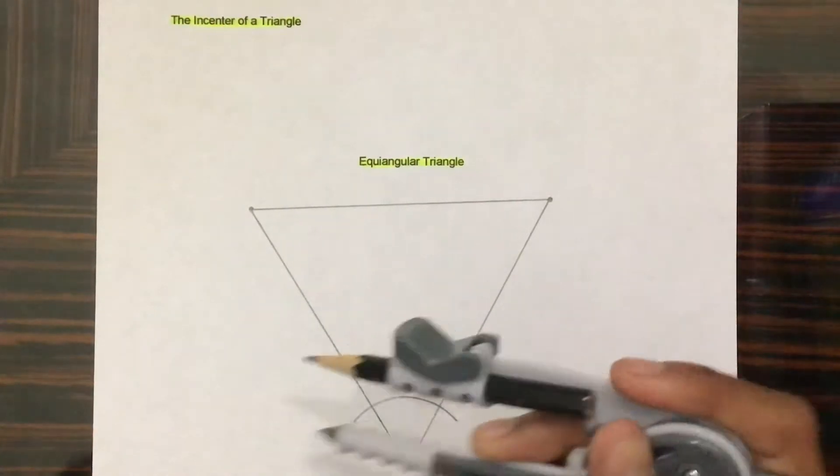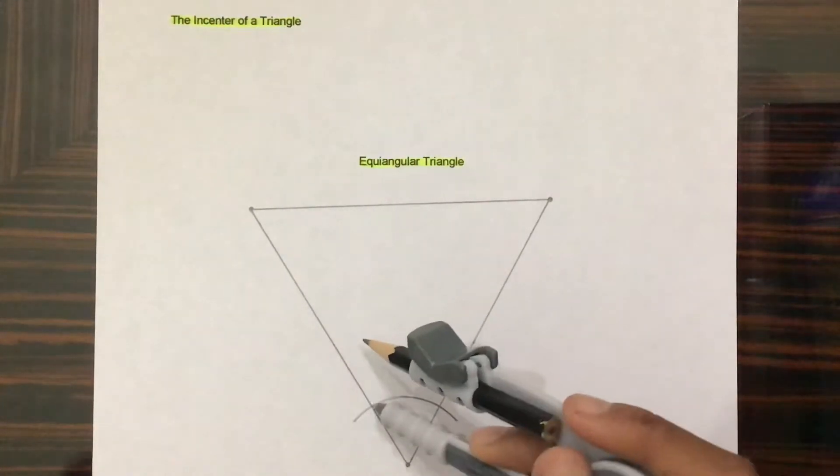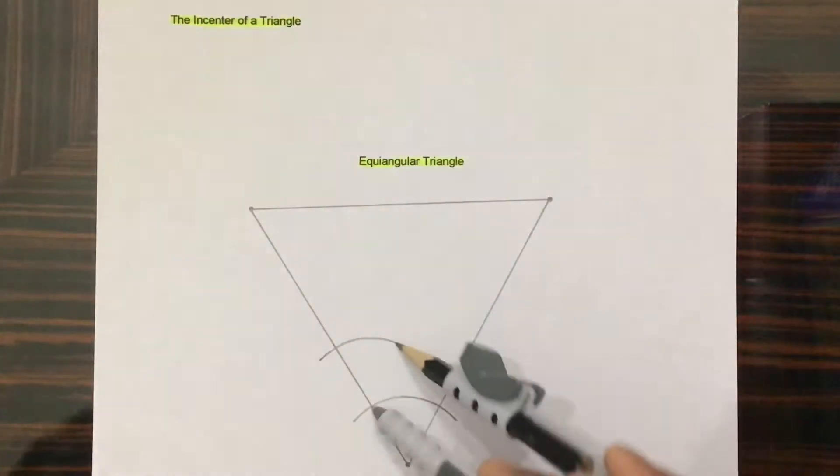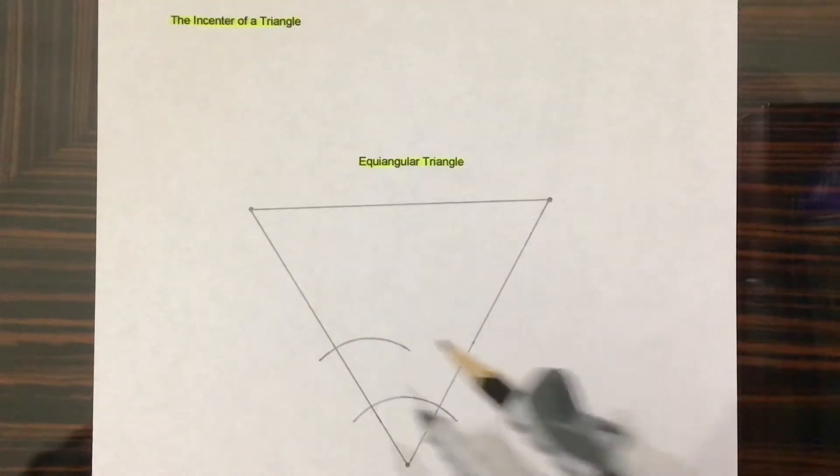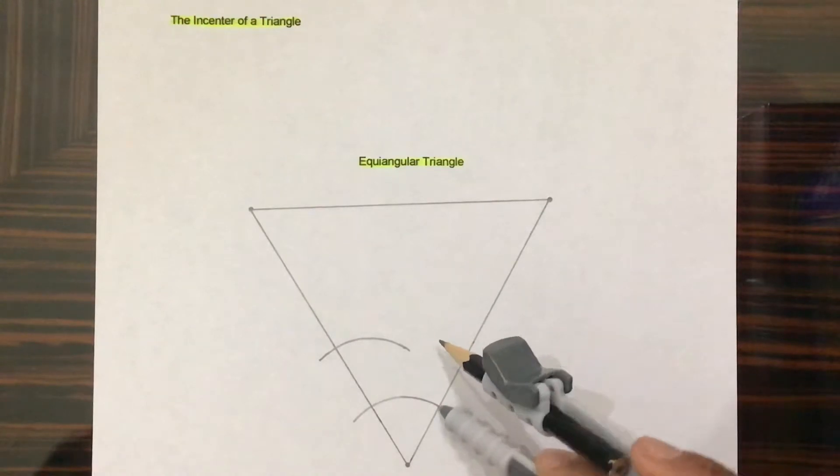And then put this compass needle on this intersection, creating another arc. And repeat the same process for this intersection.